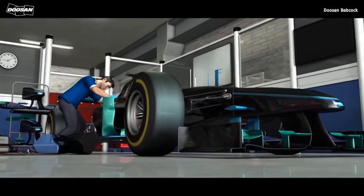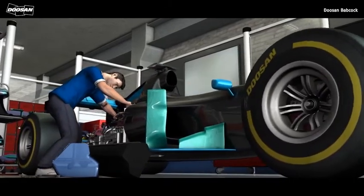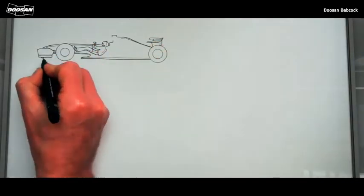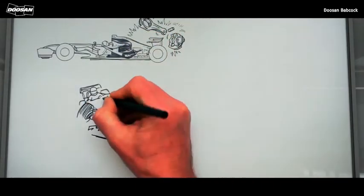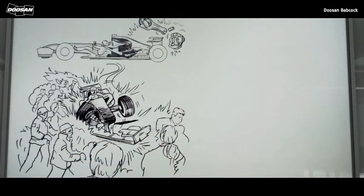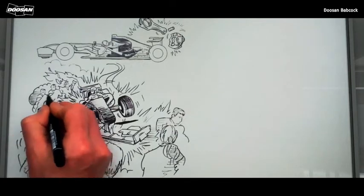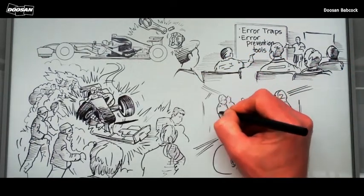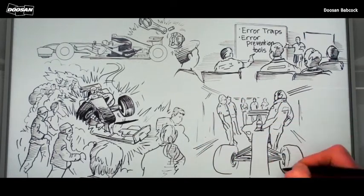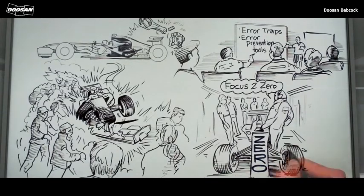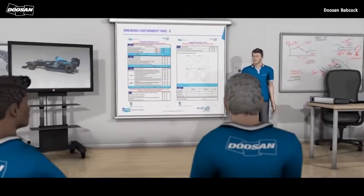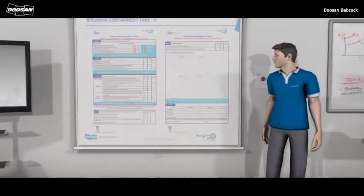In motor racing, breaking containment activities are commonplace. During development, testing and pre-race practice, engineers regularly break containment into the engine and associated systems to check the performance of the systems and the components within them. The consequences of a system or component failure during a race could be extremely severe, resulting in a high-speed incident and risking the lives of the driver, spectators and trackside marshals. As such, the team have identified the error traps and error prevention tools in the breaking containment process to mitigate the risk of an accident occurring. The team effectively adopt their version of Focus to Zero to ensure zero harm to people and zero product failures. The error traps the team identify are no different to those you'll experience when breaking containment on a Doosan Babcock facility — they all apply and the solutions are the same.